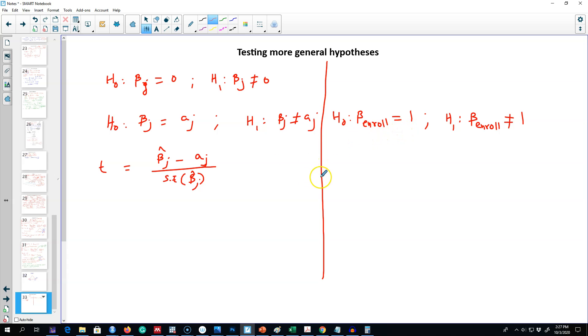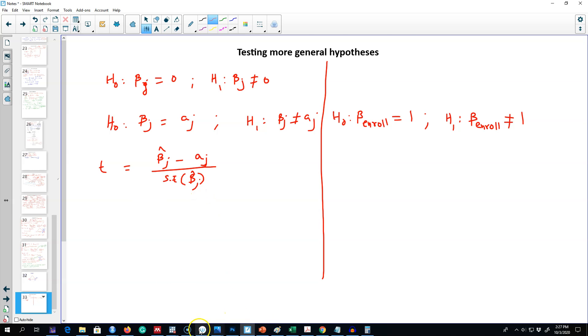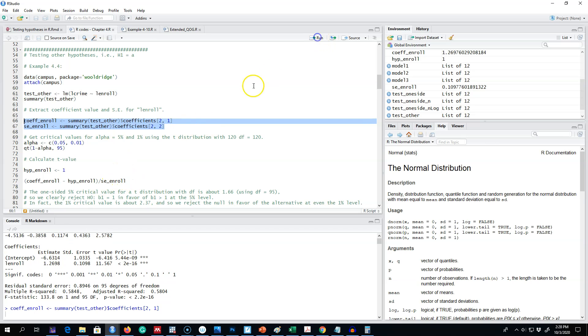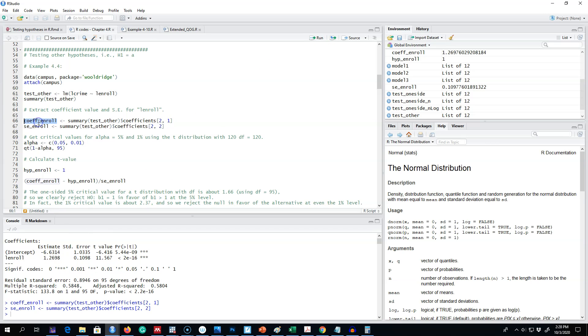We're going to calculate our t value and then compare it with the critical value. The coefficient value that we estimated is 1.27 and the standard error is 0.11. We're gonna plug in everything in the formula. Here I'm saving the coefficient value and the standard error of enrollment. I'm applying this summary function and then extracting row second.